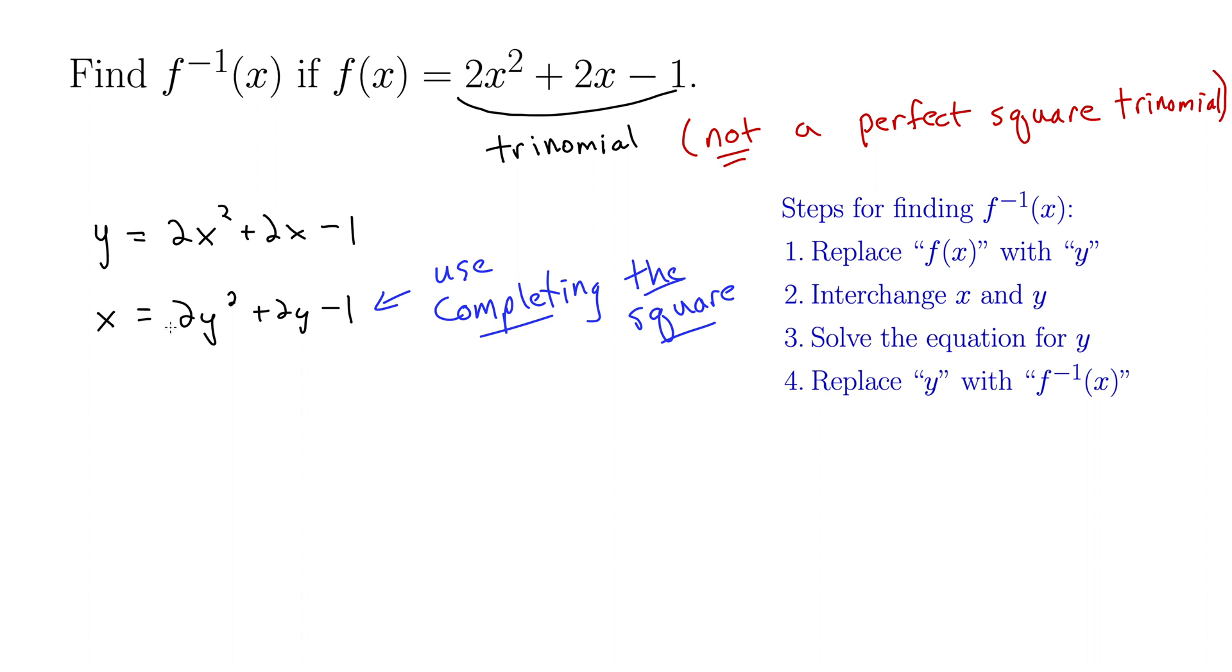Here's how we do it. I'll group together the terms with y's in them and leave some space, and out of those y terms I'm going to factor out a 2 to the front. So we have 2 times the quantity y squared plus y, and then I'm going to leave some space, and then I have my minus 1 still hanging out here.